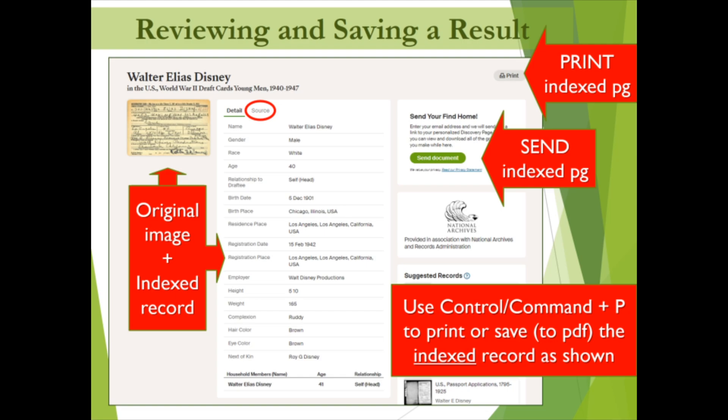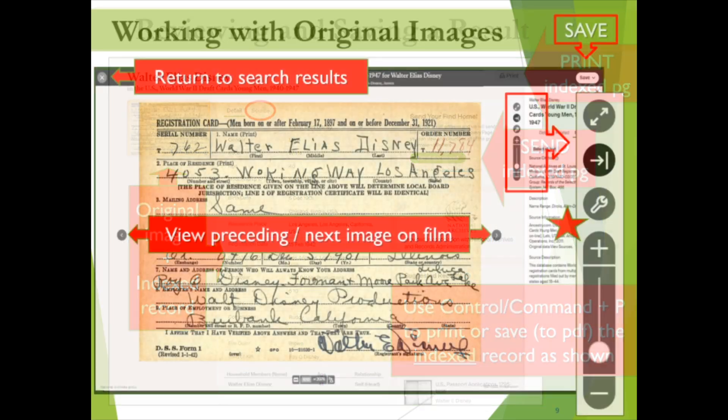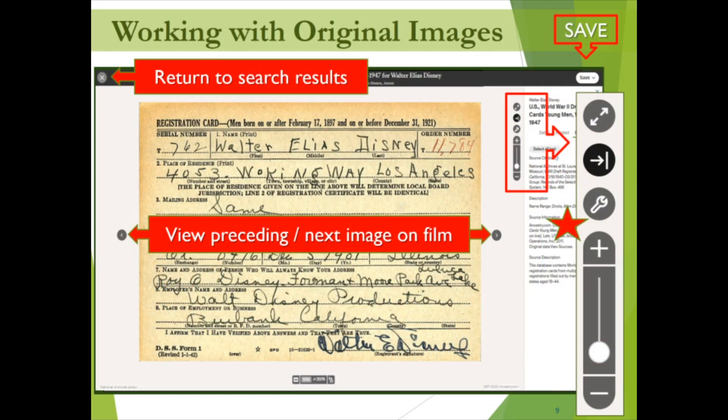Finally, you can also click on the print link in the top right to access and print or save a printer-friendly version of the same information. Before we move on to our next Walter, let's take a look at Walt Disney's original World War II draft registration document and discuss some of the Ancestry Library Edition tools available when viewing original documents.